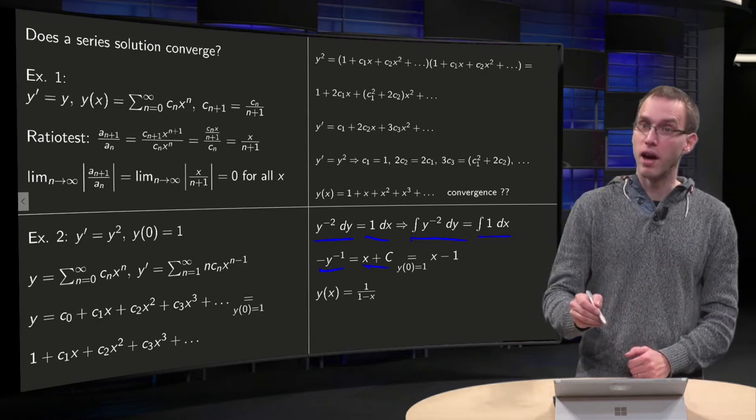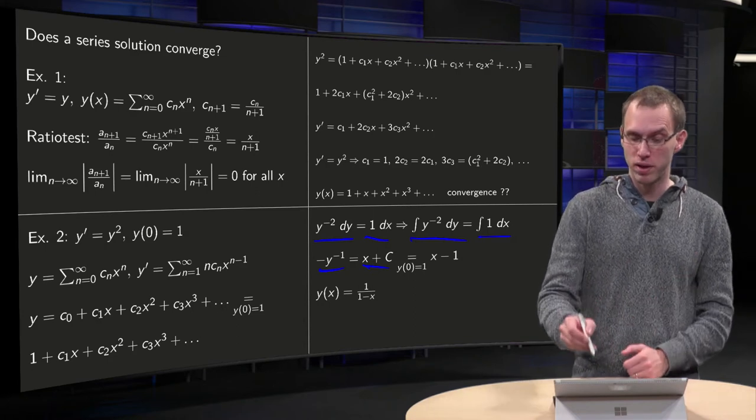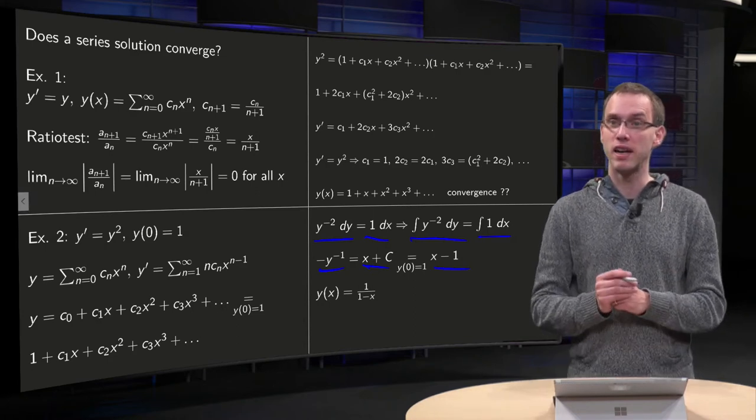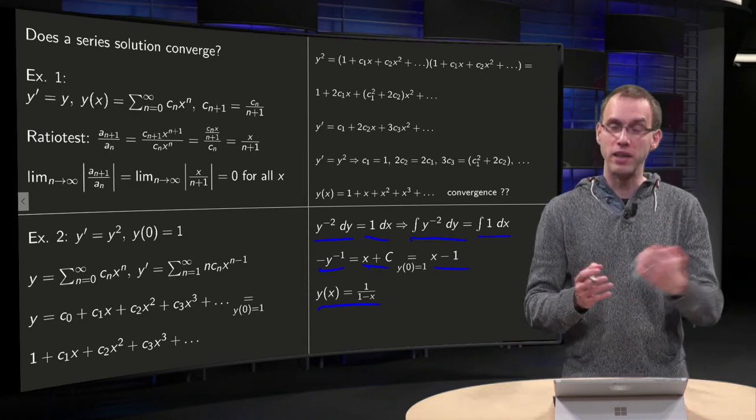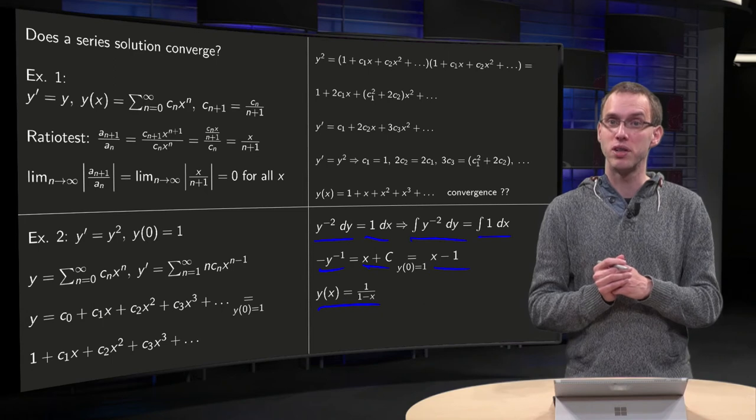Plug in the constant, x equals 0, y equals 1, then you get x minus 1 on the right hand side, and solve for y, we see y of x equals 1 over 1 minus x, and indeed y of 0 equals 1.